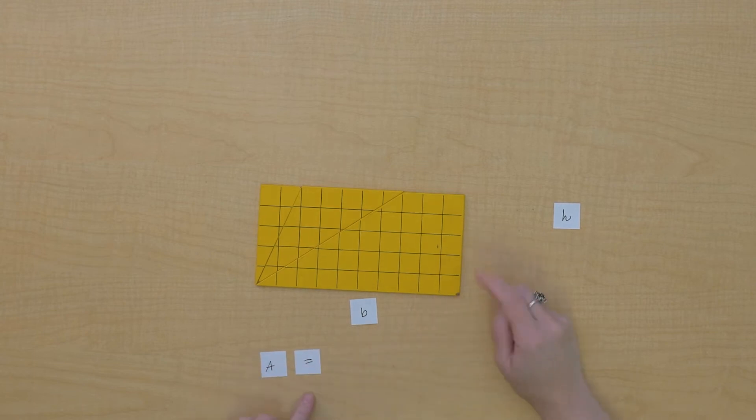It would be the base times the height of this rectangle. So let's talk about that in terms of the triangle.